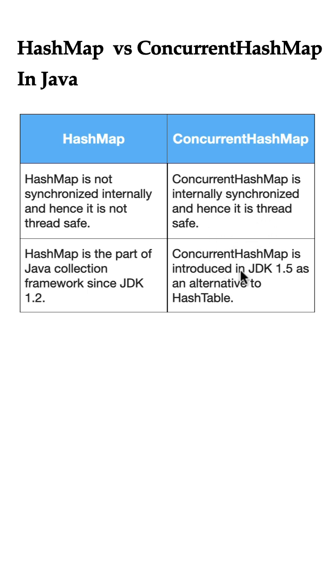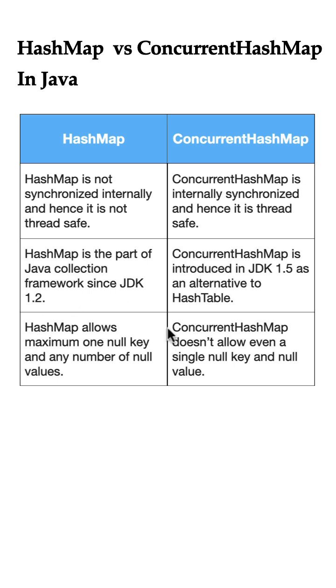HashMap has been part of Java Collections since JDK 1.2, whereas ConcurrentHashMap was introduced in JDK 1.5 as an alternative to HashTable. Next, HashMap allows a maximum of one null key and any number of null values.